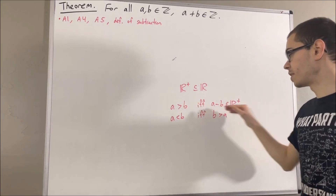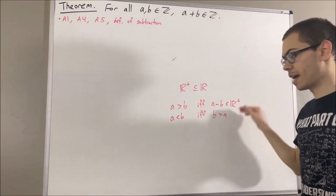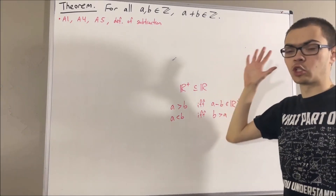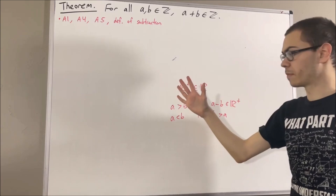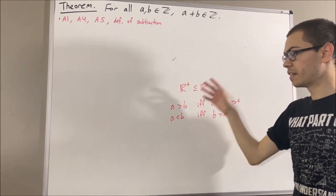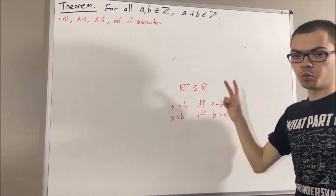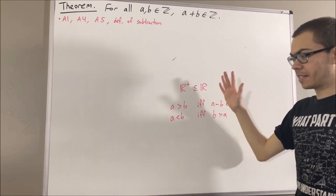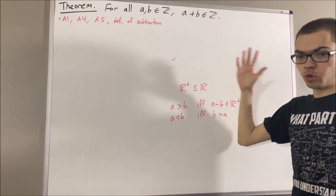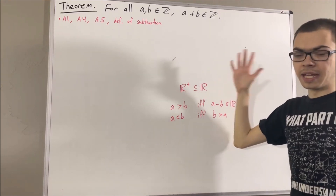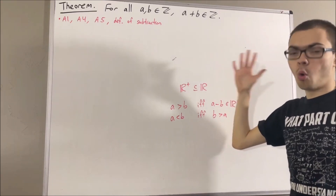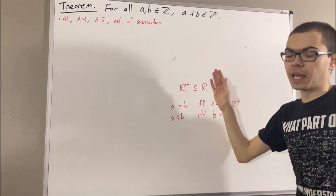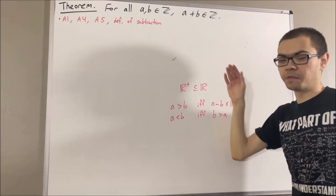From this definition and axiom 9, we have proven the trichotomy law, which says: given any two real numbers a and b, we have that a is greater than b, a is equal to b, or a is less than b, and exactly one of those is true.